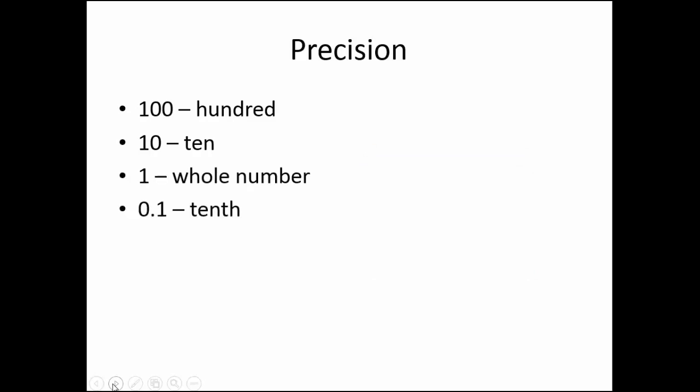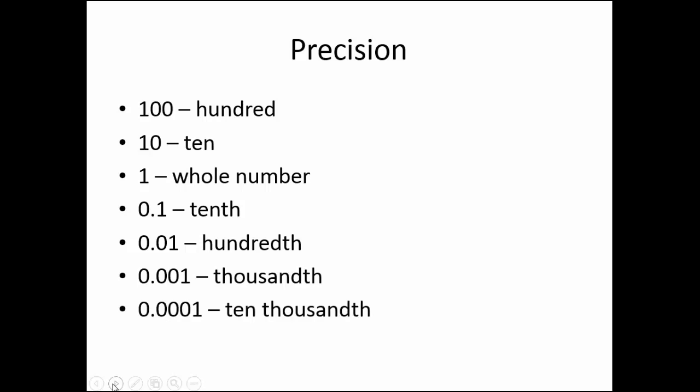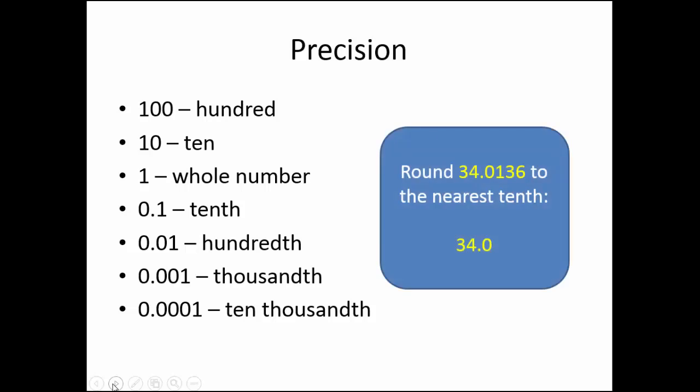This is precise to the nearest tenth, to the nearest hundredth, the nearest thousandth, and the nearest ten-thousandth. Recall that zeros are numbers too. So if you are supposed to round 34.0136 to the nearest tenth, the result would be 34.0.